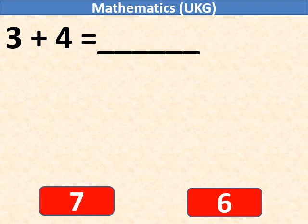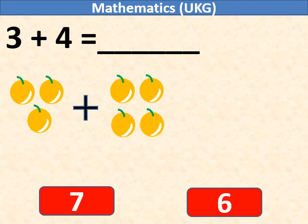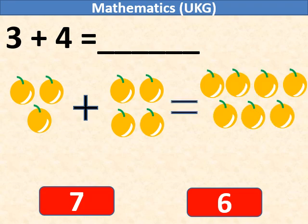3 plus 4 equals what? We have 3 oranges. We will add 4 more oranges. So we have total 7 oranges.